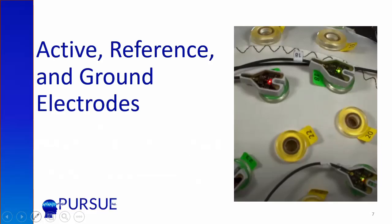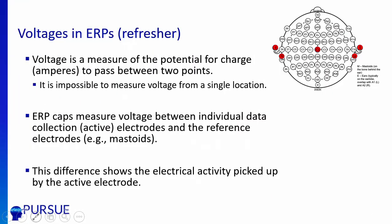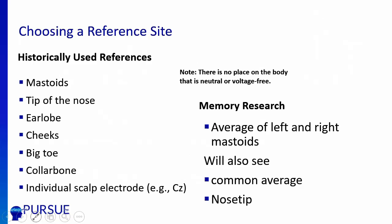A quick review of electrodes: we're recording voltage, which is the difference between two electrodes — your active electrode and your reference electrode. The ground is also part of that, to eliminate noise from the system. Historically, many different reference sites have been used. There's no good solution because there's no voltage-free or neutral position on the body. In memory research, you'll typically see people using the average of the left and right mastoids — recording to one electrode online, treating the other as an active electrode, and then digitally averaging to the left and right mastoids offline. You'll also see people use the common average and nose tip. Generally, that doesn't change the components much.